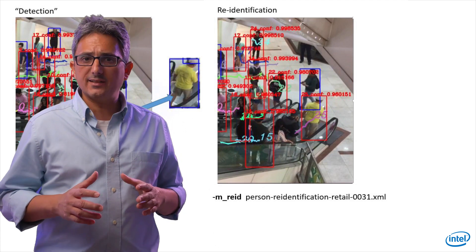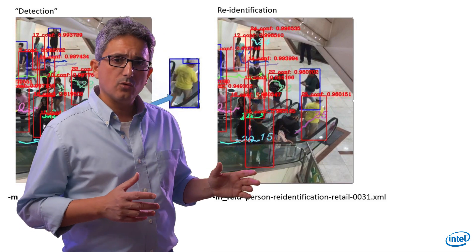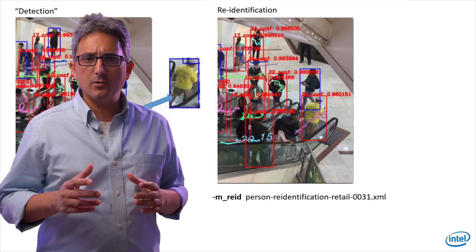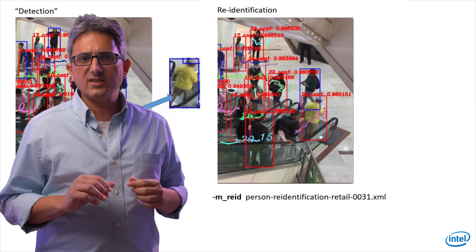If detected and tracked again, this person is getting an ID. This specific person with a yellow shirt is number 25. And you can see the trajectory of his movement.